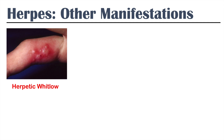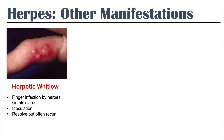Another manifestation of herpes is herpetic whitlow — an infection of herpes simplex virus on a finger. Perhaps you've had a cold sore on your lip and had a break in the skin that leads to inoculation of a finger. You're going to get these painful vesicles on your finger. This will resolve, but it will often recur because the virus hangs around in your neurons.